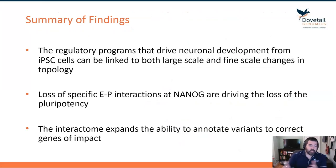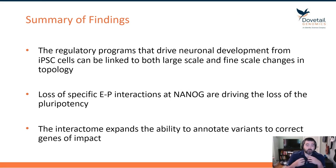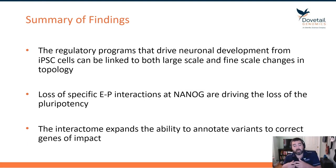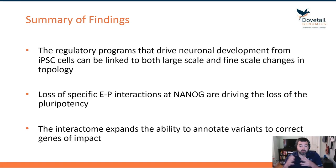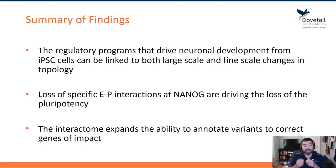It's taking this interactome data and applying enhancer-promoter annotation to SNP annotation, so we can actually have a more accurate view of what these SNPs are doing for disease-linked variants. In brief summary: the regulatory programs that drive neuronal development from iPSCs into the neuronal cell type can be linked to both very large-scale and very fine-scale topology features.